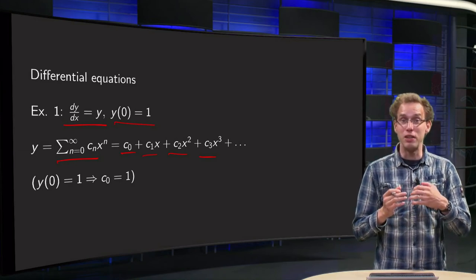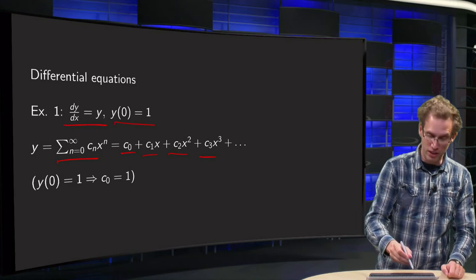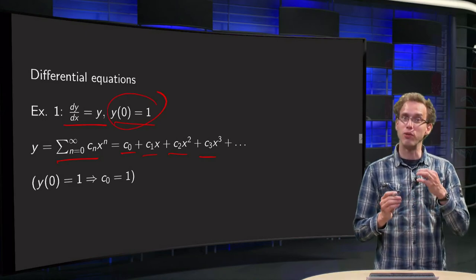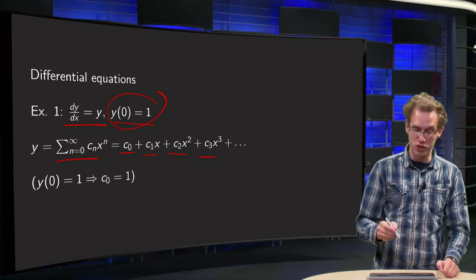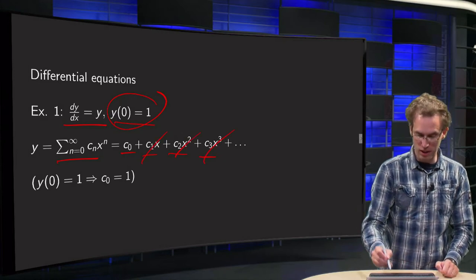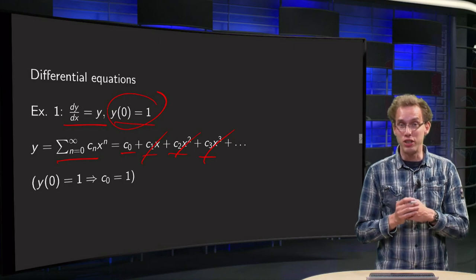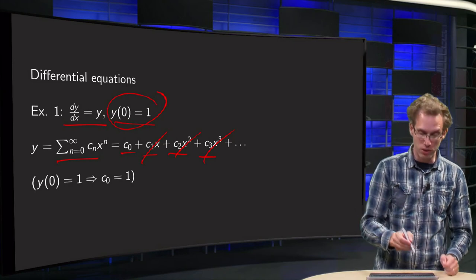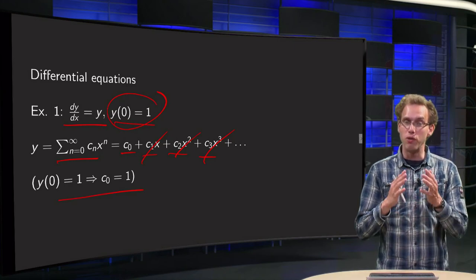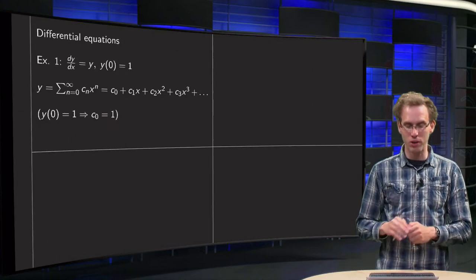We can already determine c0 because we have our initial condition y(0) equals 1. If we plug in x equals 0, then all those terms cancel out, and we get y(0) equals c0 equals 1, so c0 should be equal to 1. First coefficient found — onto the others.